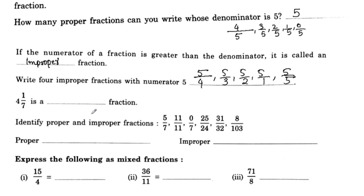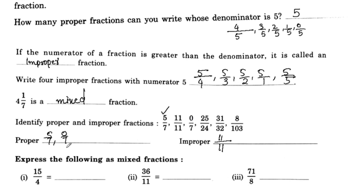This is a mixed fraction. Now, identify proper and improper fractions. 5 by 7 — this is a proper fraction. 11 by 11 — this is an improper fraction. 0 by 7 — this is a proper fraction. 25 by 24 — the numerator is greater than the denominator, so this is an improper fraction. 31 by 32 — this is a proper fraction.